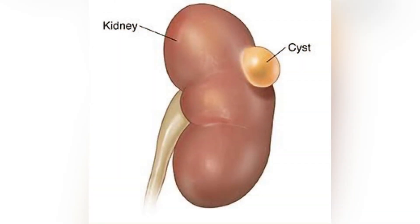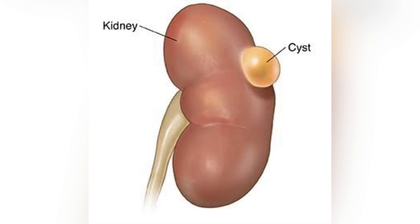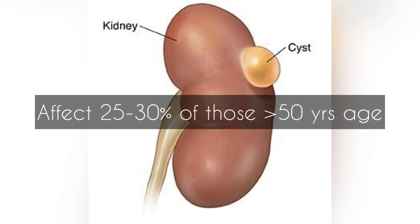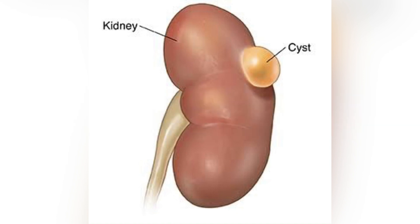Kidney cysts are small fluid filled sacs that form on the kidneys. They're quite common, affecting more than five percent of the general population. The number increases to 25 to 30 percent among people older than 50 years, and often they do not cause any symptoms.